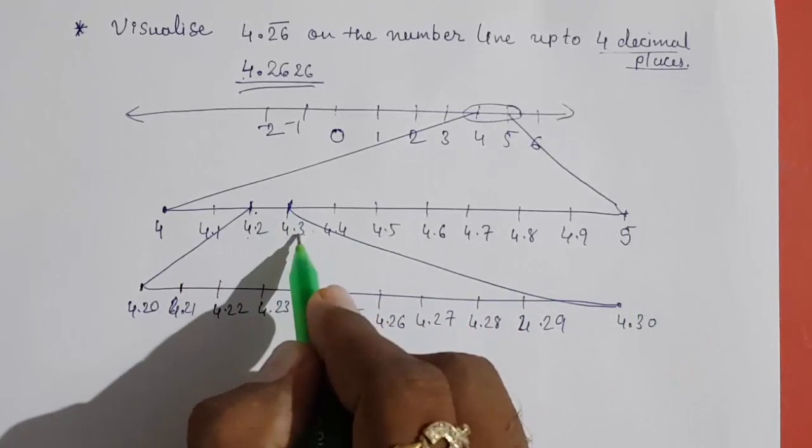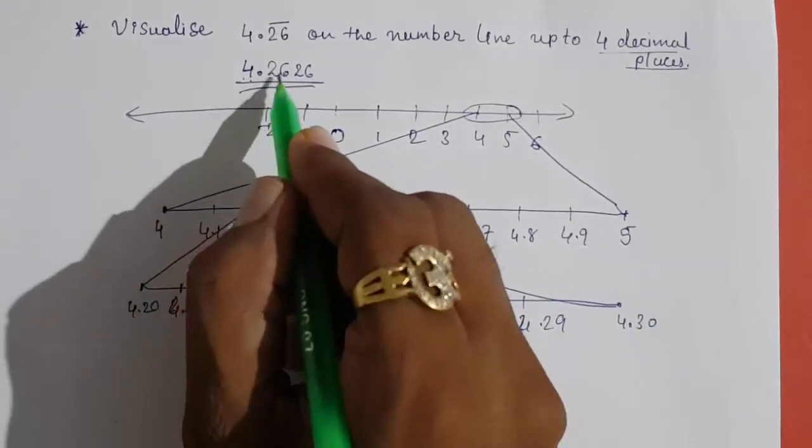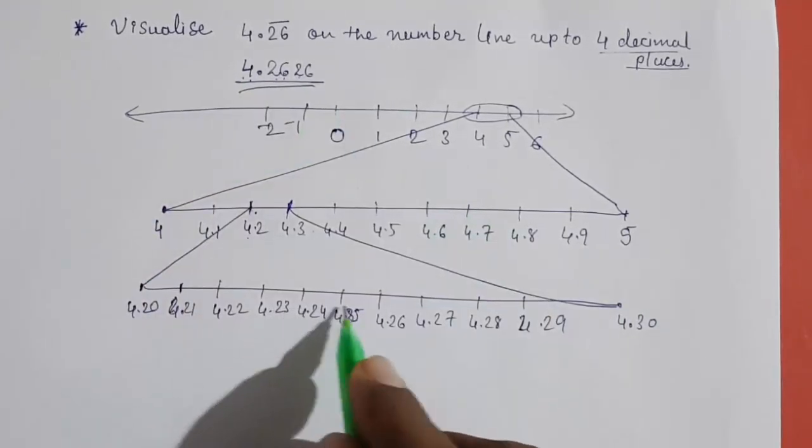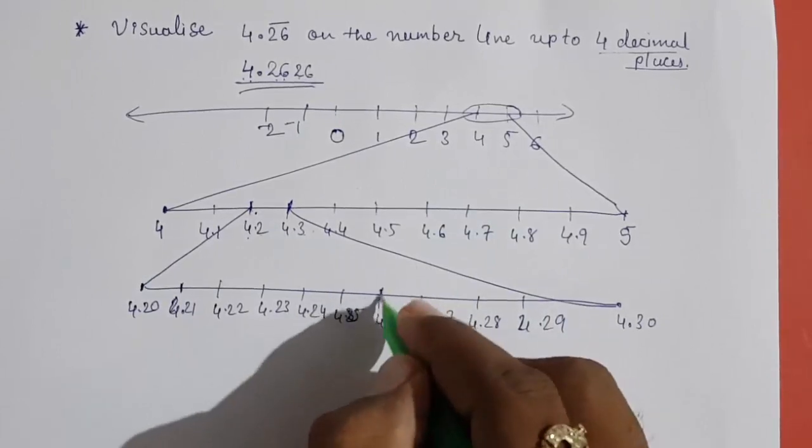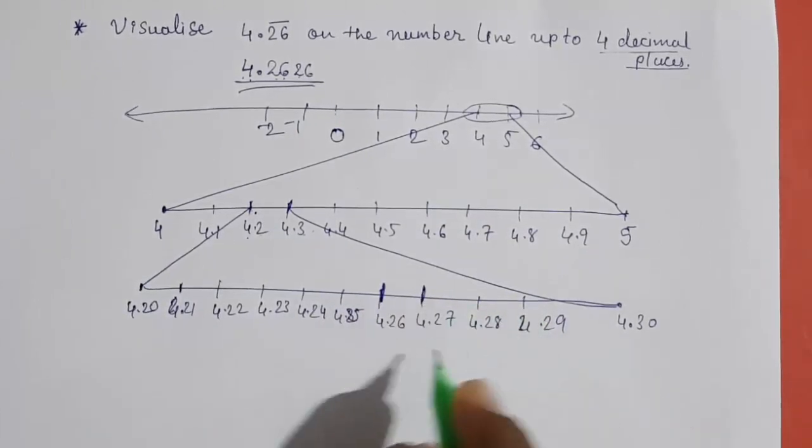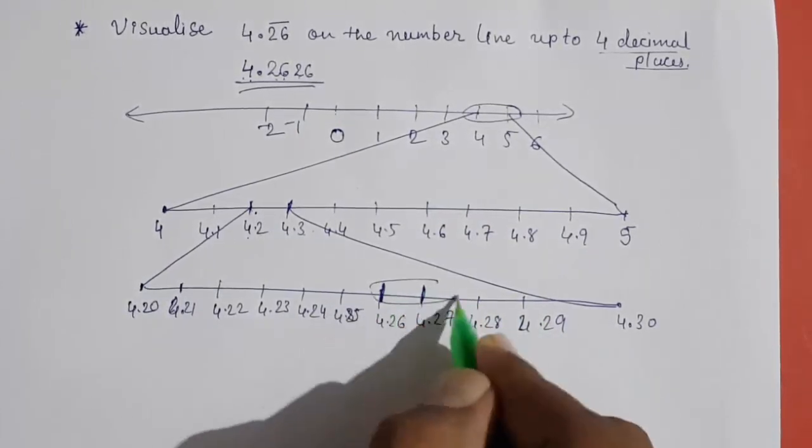Now 4.262, so 4.26 is here and 4.27 is here, so we have to again magnify this.